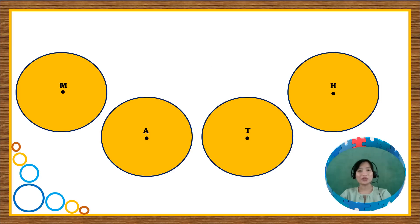You're right! Just how we determine or distinguish one person from another, we can distinguish one circle from another based on their names. So for the following circles, their names are circle M, circle A, circle T, and circle H.